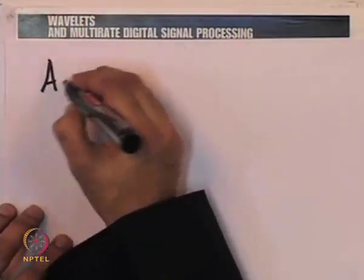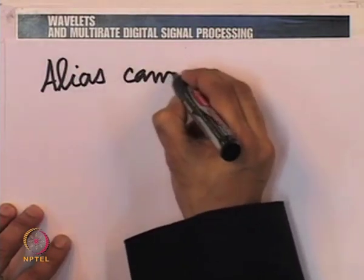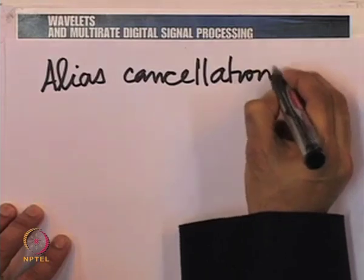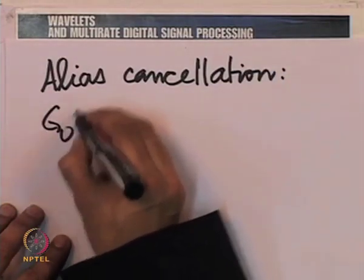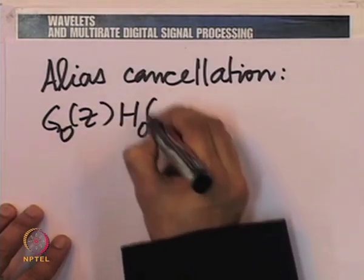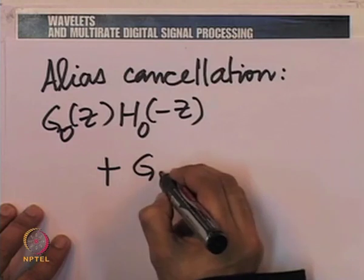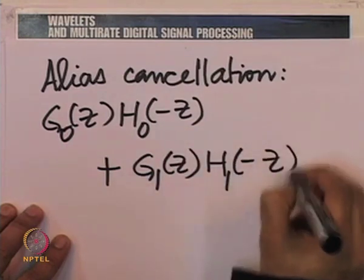To answer that question, let us look at the requirements of aliasing cancellation and perfect reconstruction. The aliasing cancellation requirement essentially says G_0(z) H_0(-z) plus G_1(z) H_1(-z) equals zero. If we replace z by -z, we would get H_0(z) G_0(-z) plus H_1(z) G_1(-z) equals zero. Let us keep this as one observation and take the second observation, namely the perfect reconstruction condition.